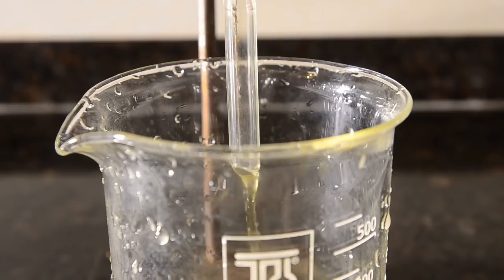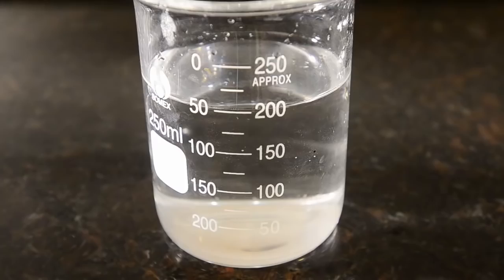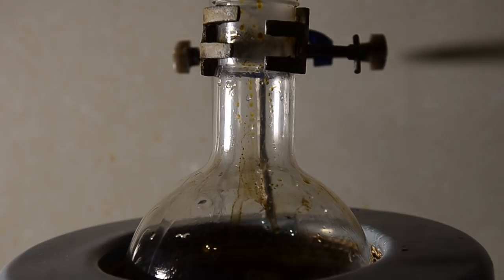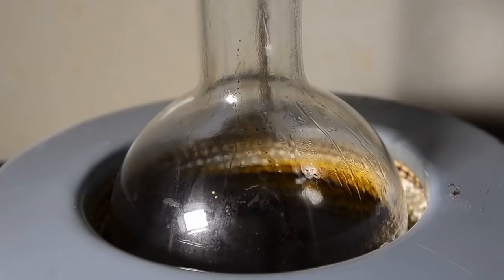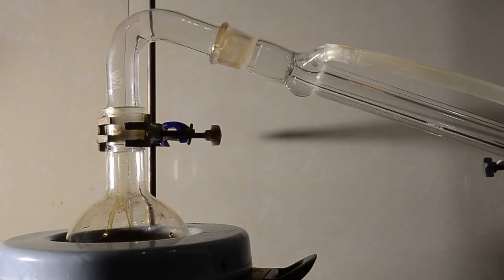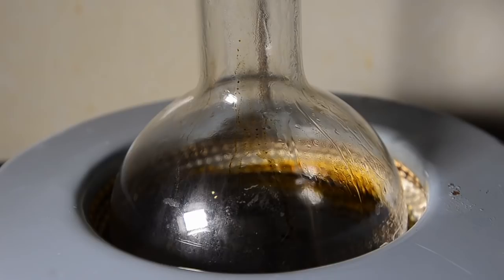Now pour the organic top layer into a 500 ml flask and add 200 ml of water. We're going to steam distill out our ketone product, and you'll need another portion of water later on during distillation because it takes some time. Set up for distillation. First of all a little dichloromethane will distill, and then benzene mixed with a small amount of water as the acetone.